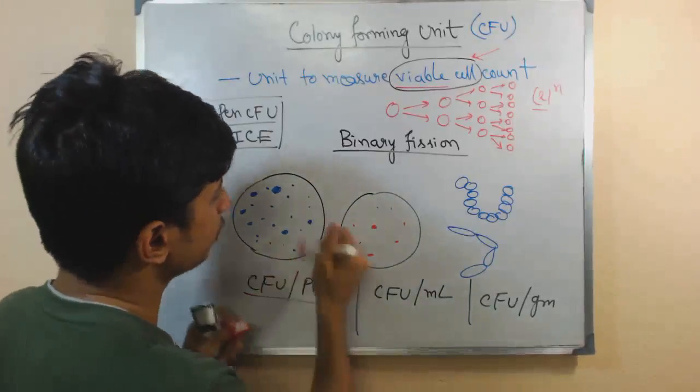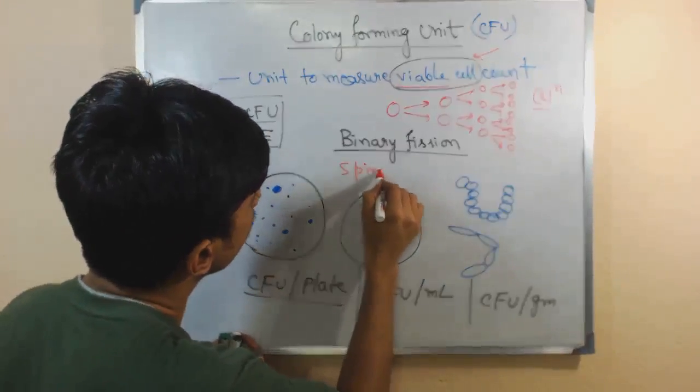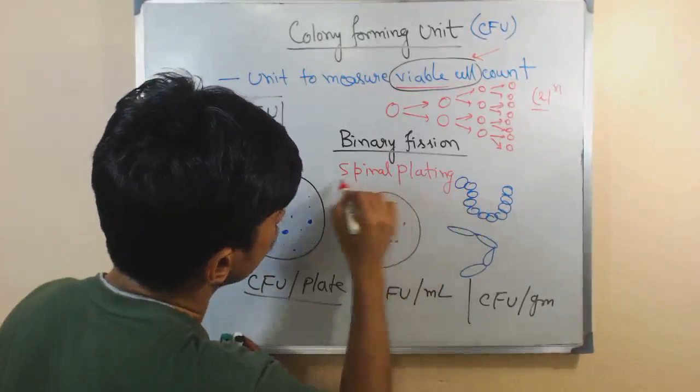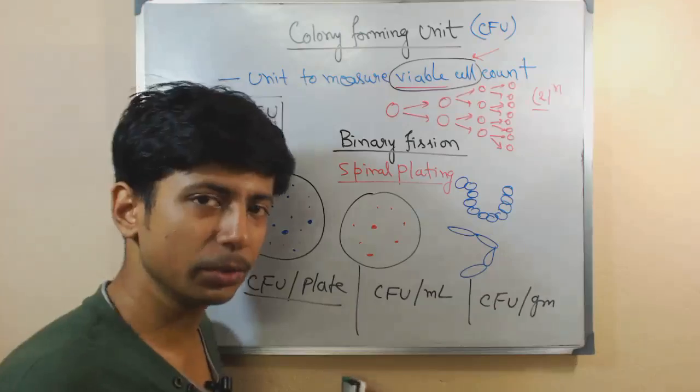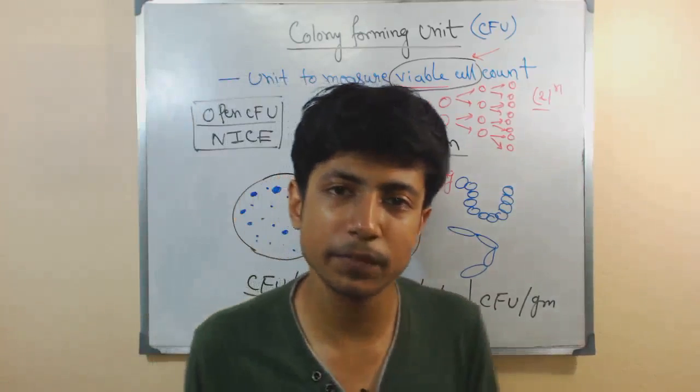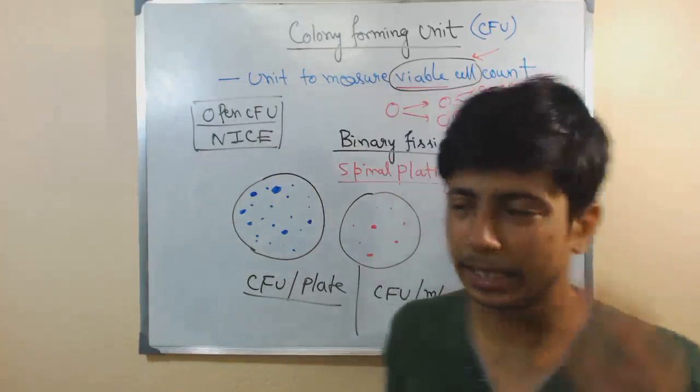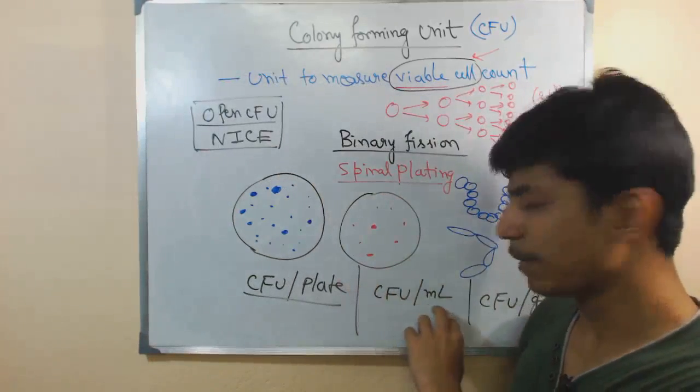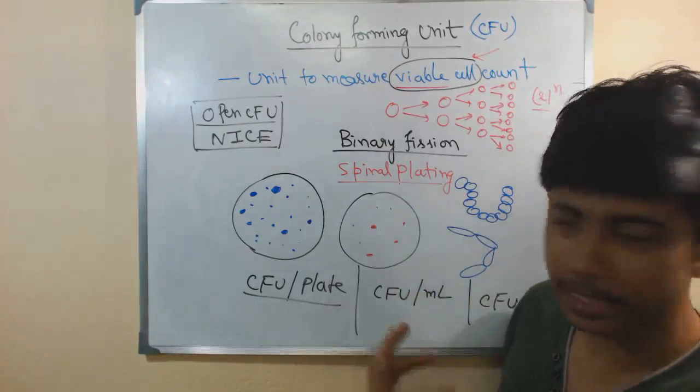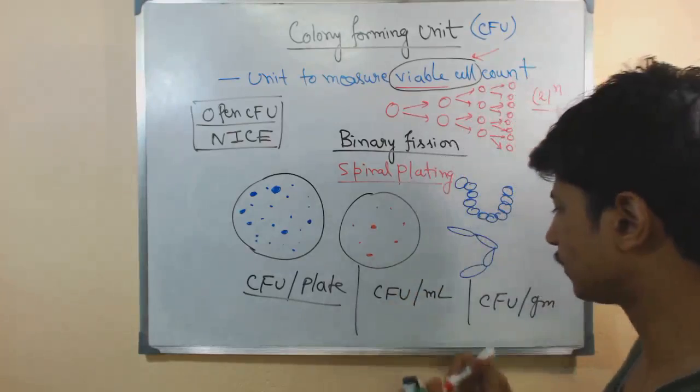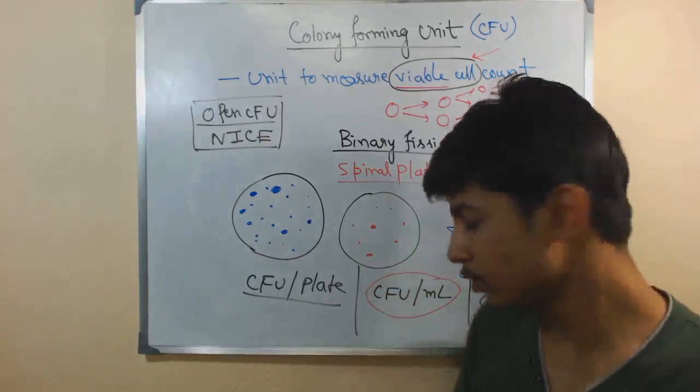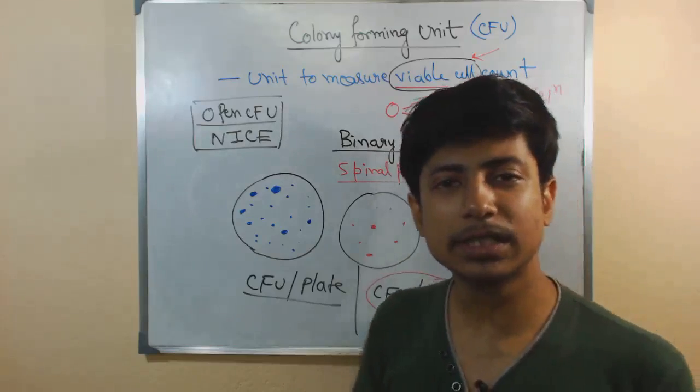But now there are techniques—the whole plating system is automated now with a technique called spiral plating. These techniques are newly developed, so we can actually see how many CFUs are present in a particular sample specimen which is a liquid sample. CFU per ml—we can get the idea. It is most of the time used because the culture that we plate is in liquid form.